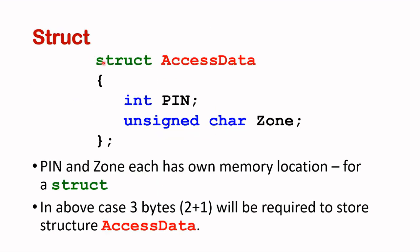Let's take a look at struct. I'm repeating from my previous video an example. I have a struct with a structure data type called access data, which consists of two members or elements. The first member is pin of type int, and the second member is zone of type unsigned char. Each of these members will have its own memory location.